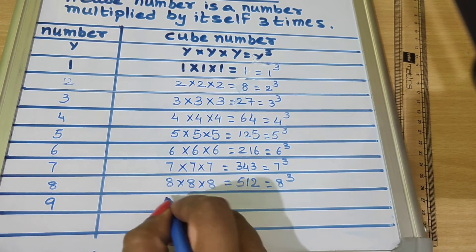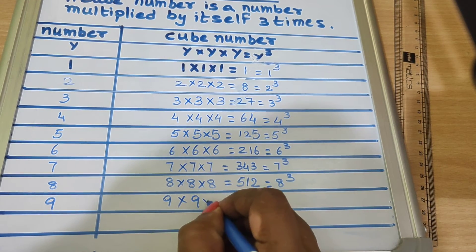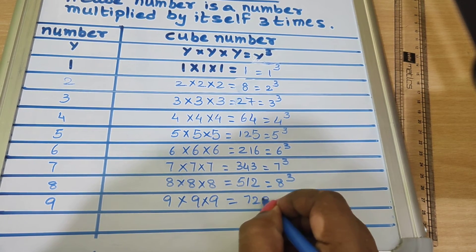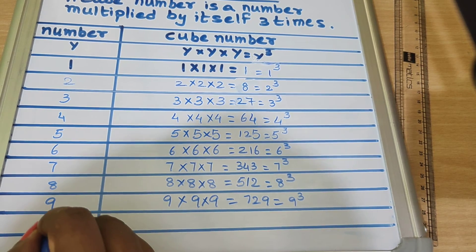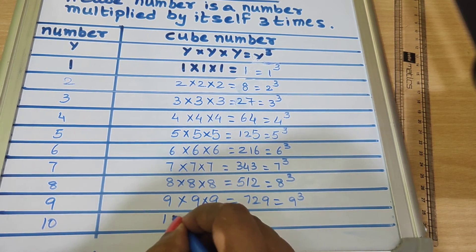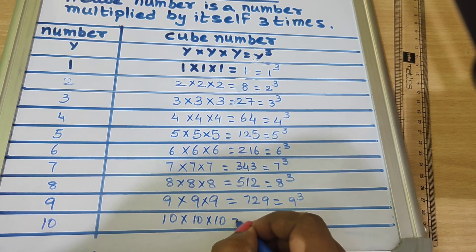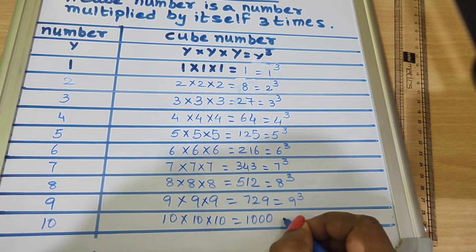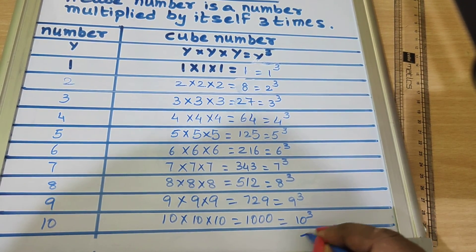9 into 9 into 9 equals 729, it's 9 cube. 10 into 10 into 10 equals 1000, we write as 10 cube. Thank you.